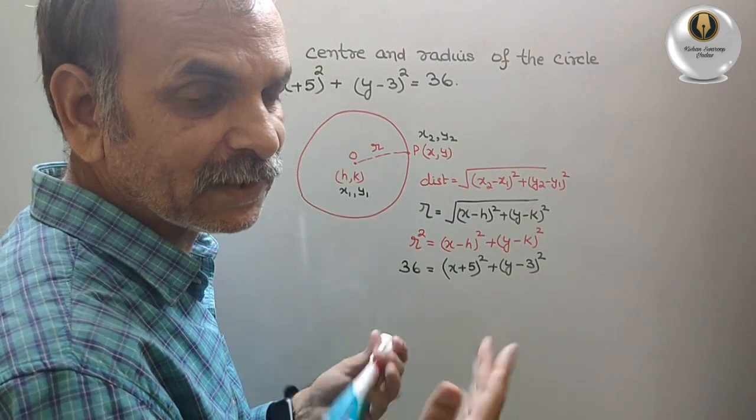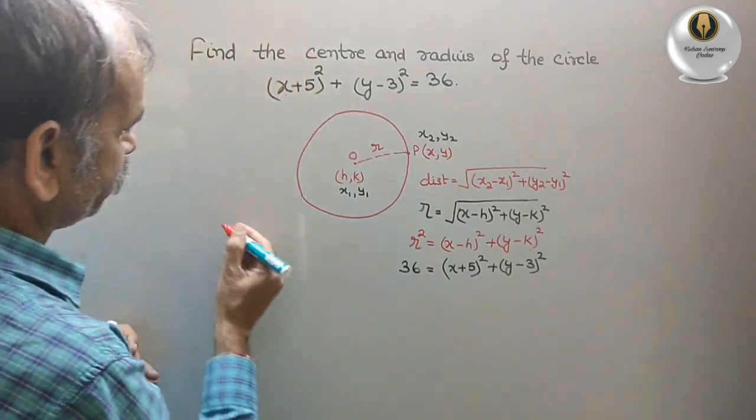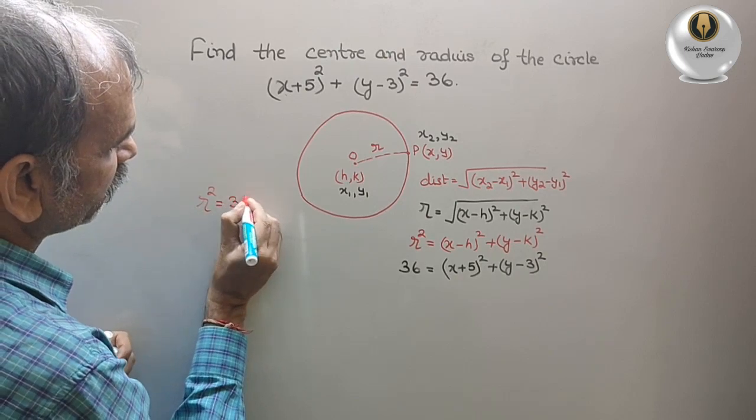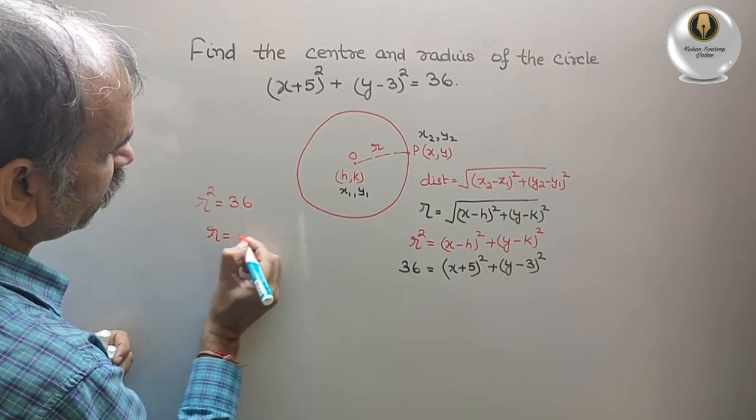So r is 6. r² is 36, so r is equal to 6.